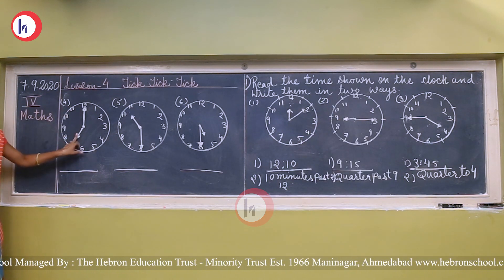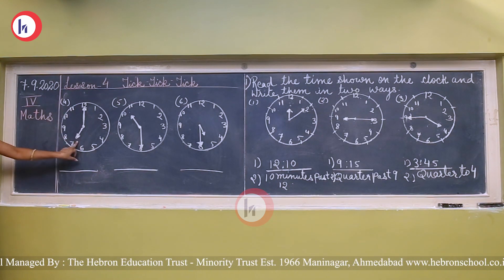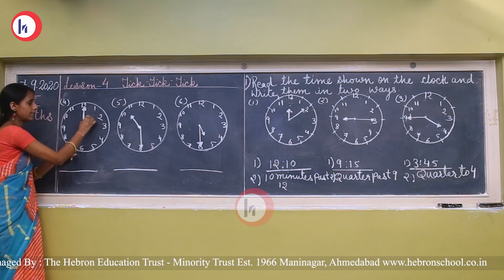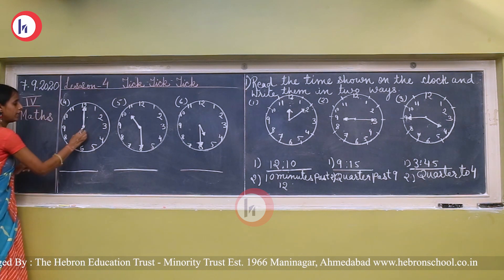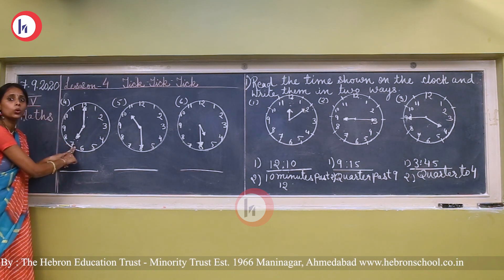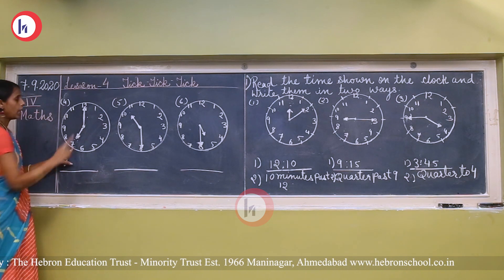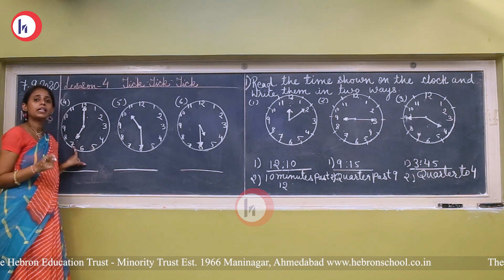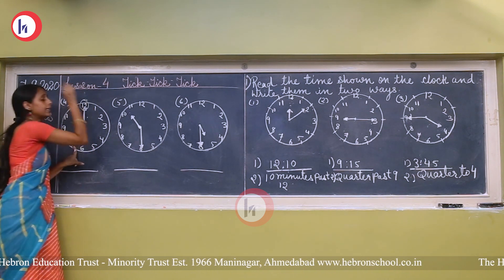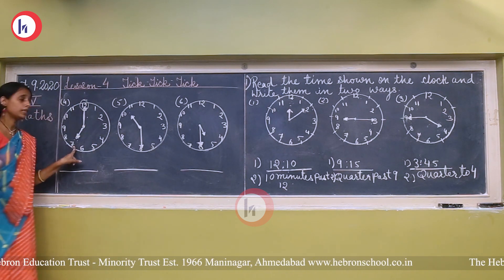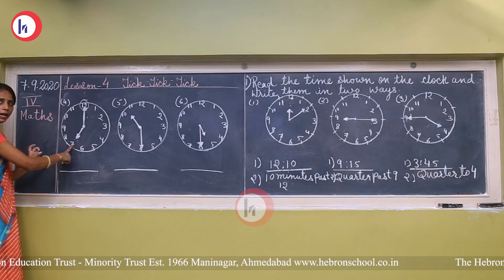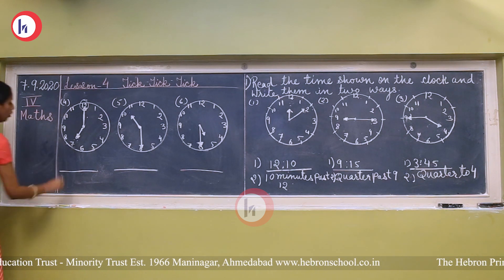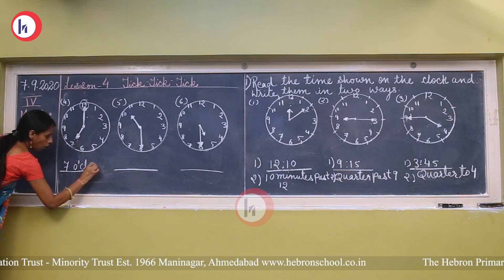Next question — see the next clock. There are two hands: the short hand is the hour hand, and the long hand is the minute hand. The hour hand is pointing to 7, meaning 7 o'clock. The minute hand is pointing to 12. When the minute hand is pointing to 12, it is the top of the hour — only see where the hour hand is. It is on 7, so we write 7 o'clock.